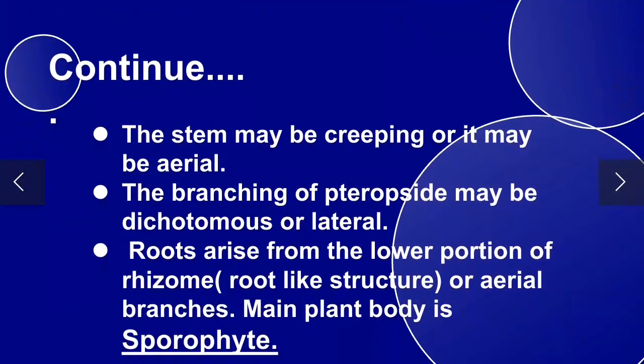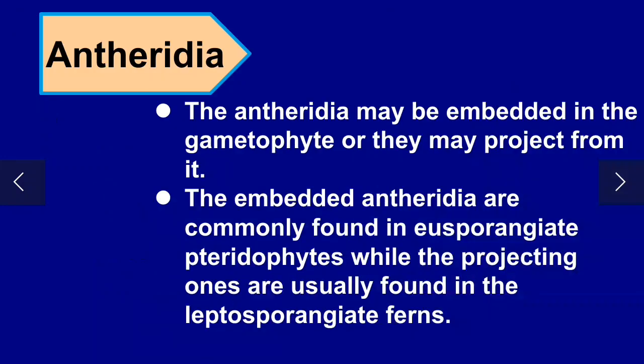The stem of Tracheophytes may be creeping or aerial. Branching may be dichotomous or lateral. Roots arise from the lower portion of the rhizome or aerial branches. The rhizome is a root-like underground structure. The main plant body is the sporophyte. Antheridia is the male reproductive organ and may be embedded in the gametophyte.